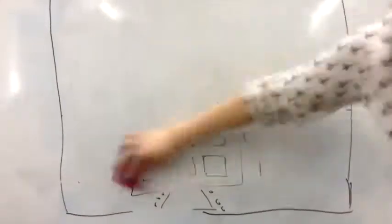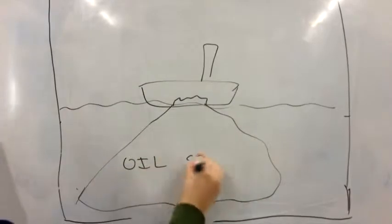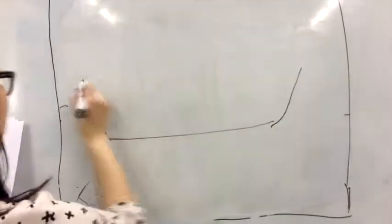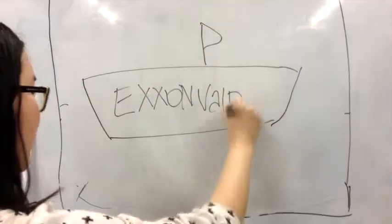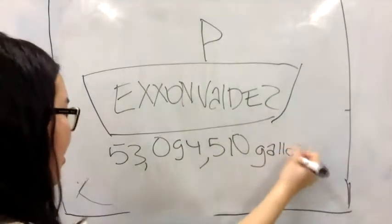There were 216,000 to 750,000 barrels of oil that were spilled. Exxon Valdez was the largest oil spill ever in the US until the Deepwater Horizon spill. Exxon Valdez was carrying 53,094,510 gallons of oil.